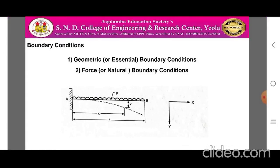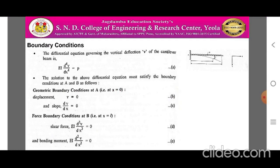The figure shows an example of boundary conditions. In geometric boundary conditions for structural mechanics problems, the essential boundary conditions include prescribed displacement, slopes, also known as kinematic boundary conditions. In case of force boundary conditions, they are defined by certain forces or pressure. The figure shows a cantilever beam AB subjected to a uniform distribution load P, where V is the vertical deflection, L is the length, E is the modulus of elasticity, and I is the moment of inertia. The differential equation governing the vertical deflection V of the cantilever beam is EI d⁴V/dx⁴ = P.